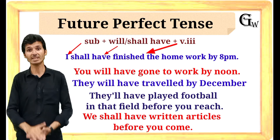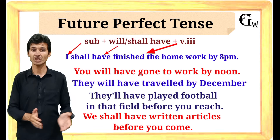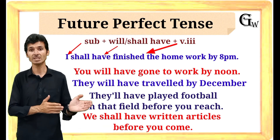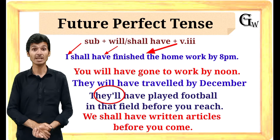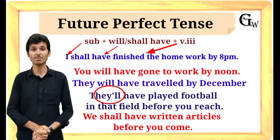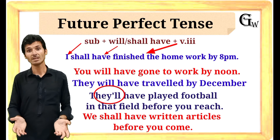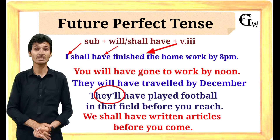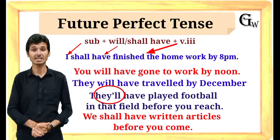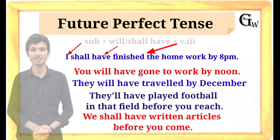So if you want to eliminate this confusion as well, use a contraction. That means take the subject — I, he, she, or whoever it is — add an apostrophe and then double-L. This way your confusion will end both in written form and when you pronounce it, whether it becomes 'she'll', 'he'll', 'I'll', or 'they'll'. The confusion about whether you used 'shall' or 'will' will be completely gone.